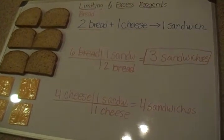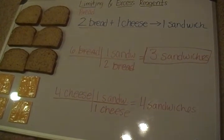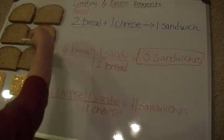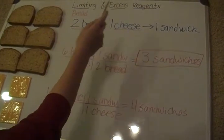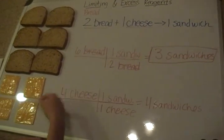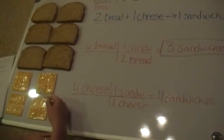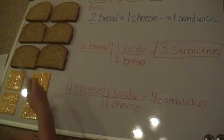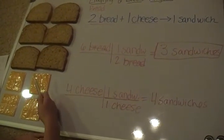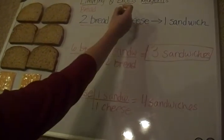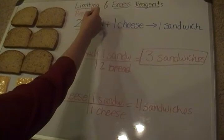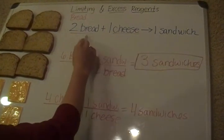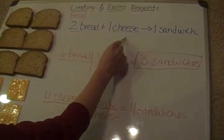My excess reagent: if I make three sandwiches, I use all my bread. But my excess reagent, my cheese — I have four slices of. So after I make three sandwiches, I'm still going to have some cheese left. Remember, your excess reagent, just like your limiting reagent, has to be one of your reactants. So if it's not bread, it has to be cheese.